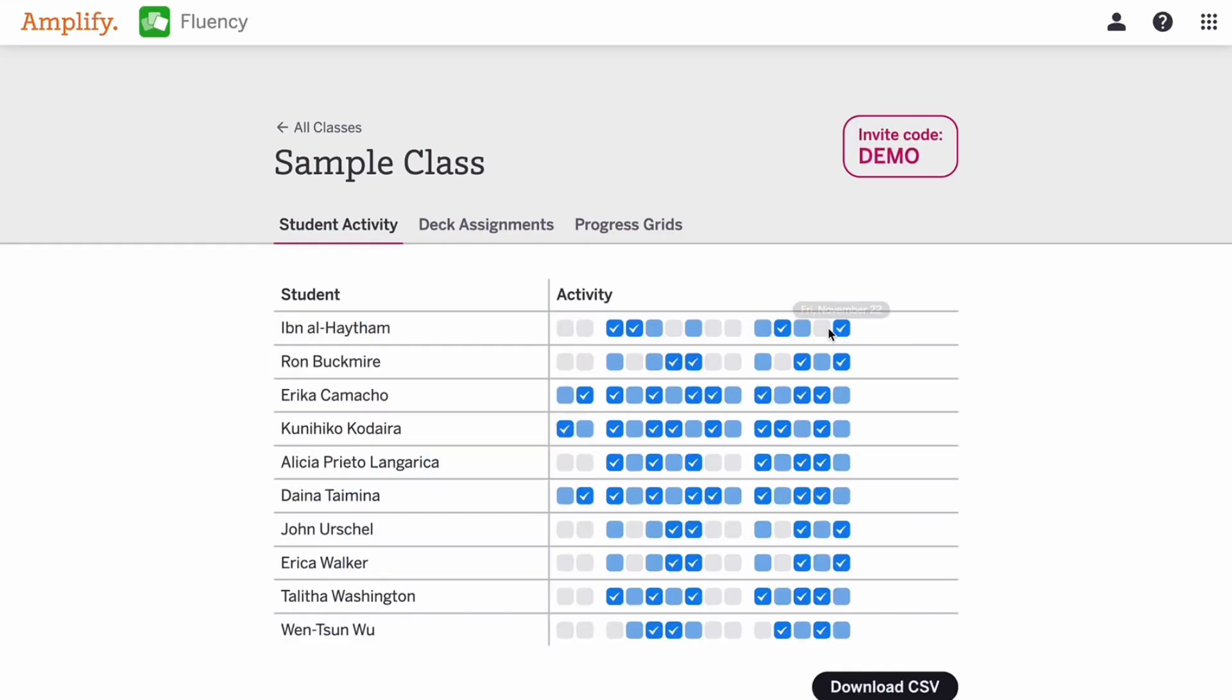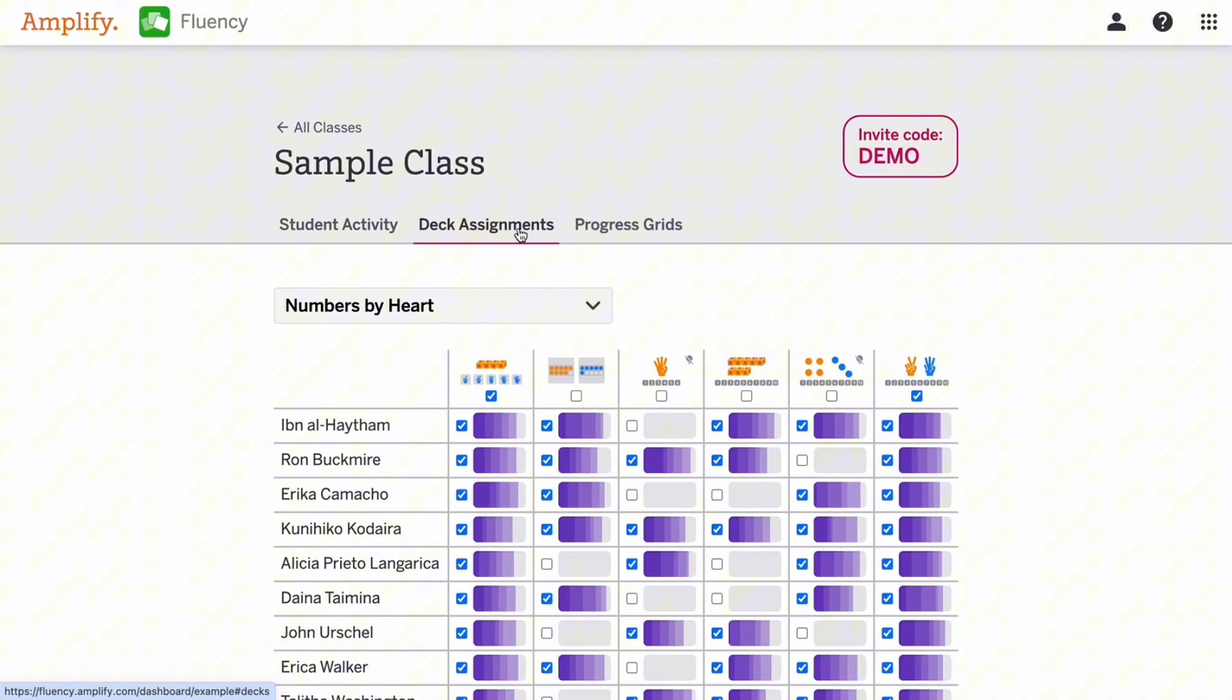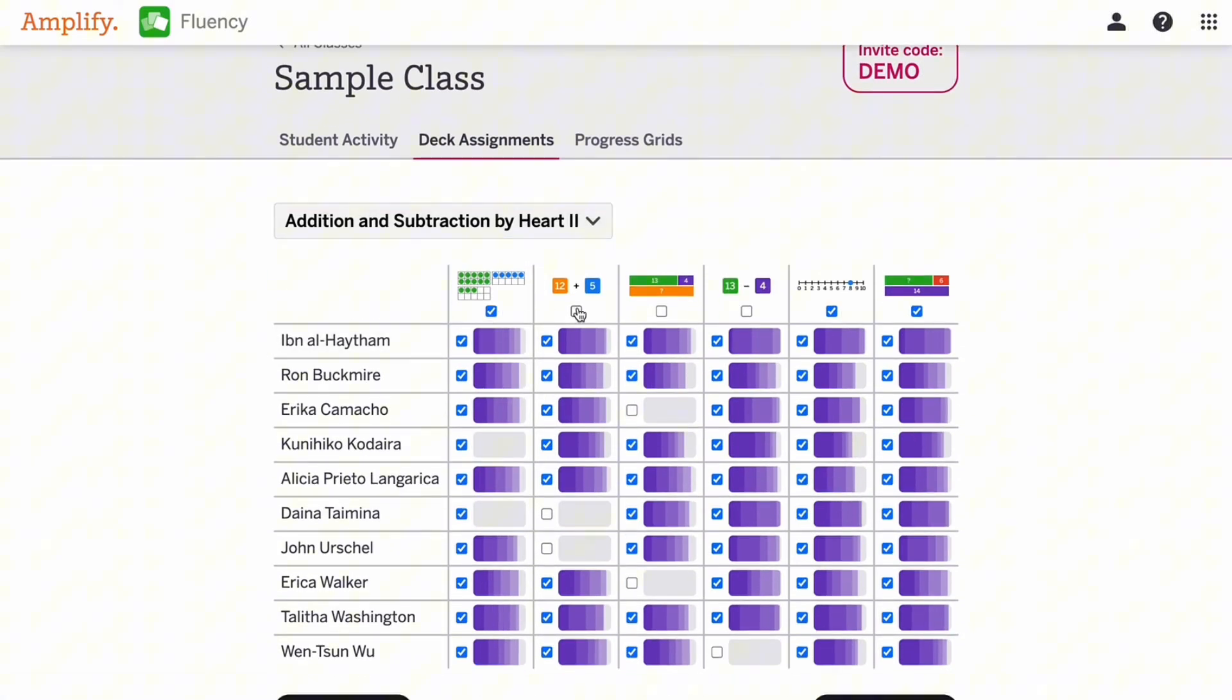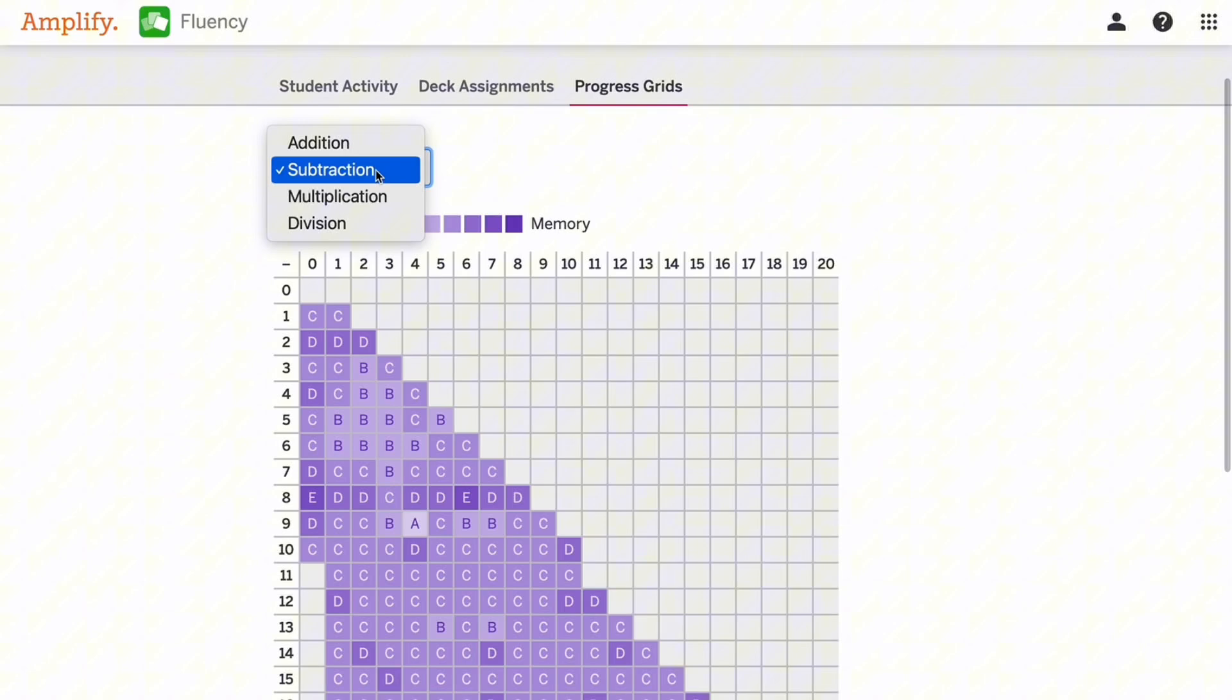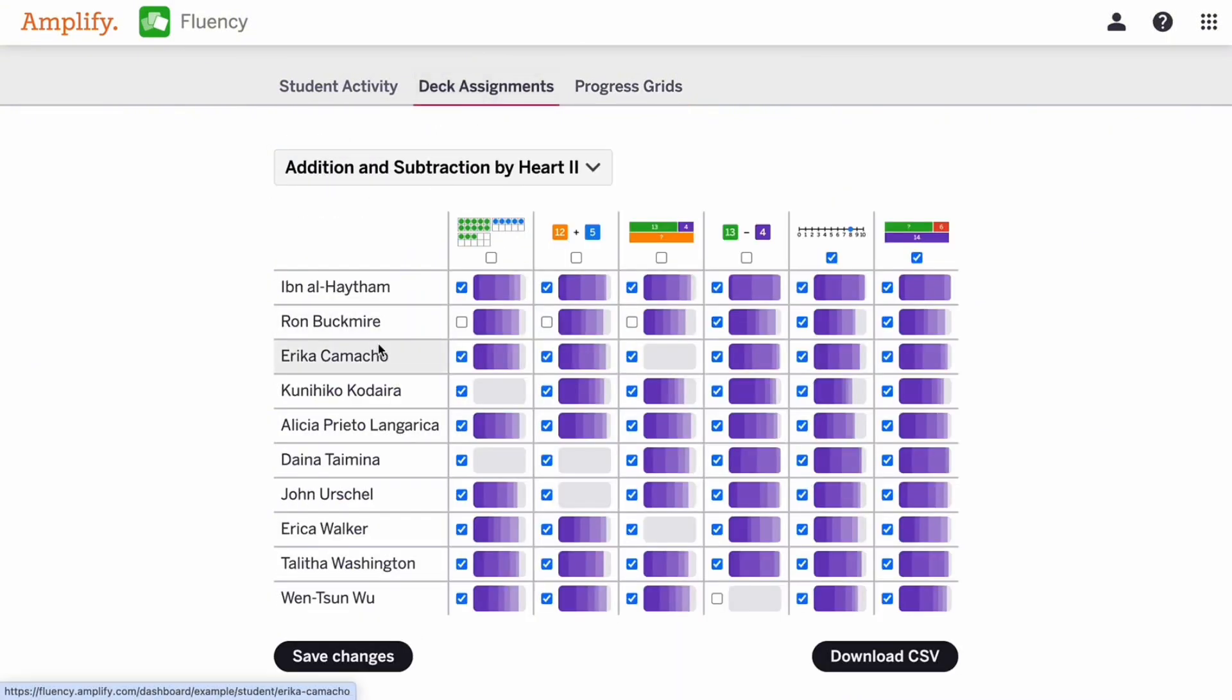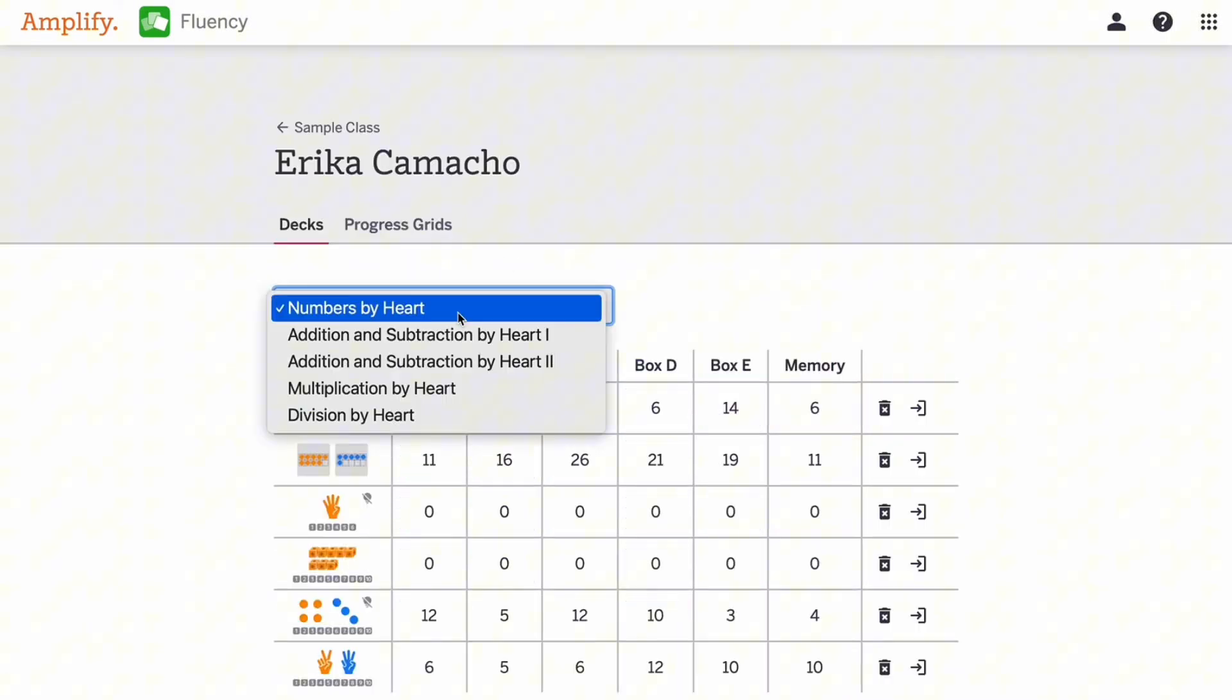Teachers can easily assign flashcard sets to students and view their progress on their dashboard. The dashboard will only be accessible to those users who have class rosters of students associated with their account. Once in the dashboard, teachers can select a class and then use the various tabs and drop downs to access a range of settings and student reports.